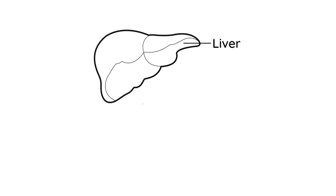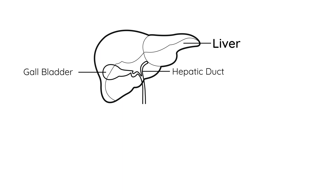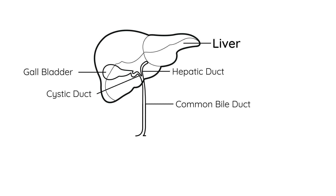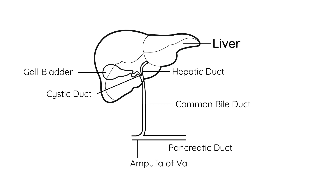Here we have the liver, and right underneath it you have the gallbladder. Coming out through both of these are some ducts. The one that comes out through the liver is known as the hepatic duct, and the one that comes out of the gallbladder is known as the cystic duct. Those two join to form the common bile duct, which then joins with the pancreatic duct to form the ampulla of Vater, which opens into the duodenum.